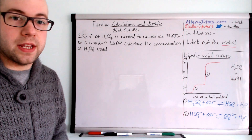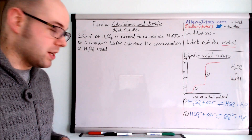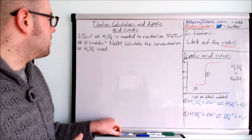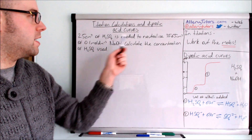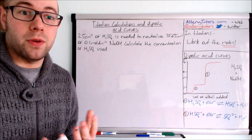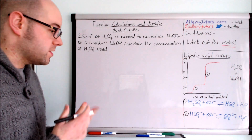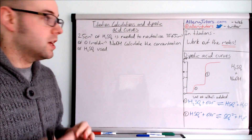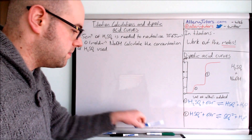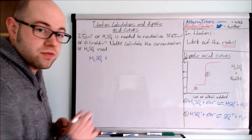Now let's quickly look at this titration calculation. It's a standard titration calculation — we'll run through it, and at the end I'll show you how it links with A2 concepts. We've got 25 cm³ of sulfuric acid needed to neutralize 35.65 cm³ of 0.1 mol/dm³ sodium hydroxide. We need to calculate the concentration of the sulfuric acid. The first thing we always do is write the balanced equation: H₂SO₄ reacting with sodium hydroxide.